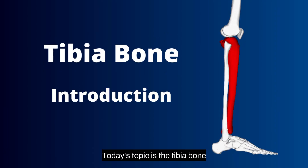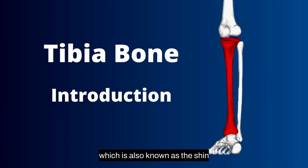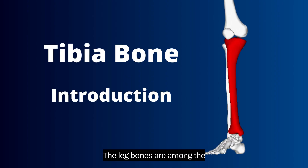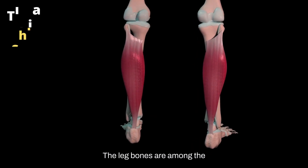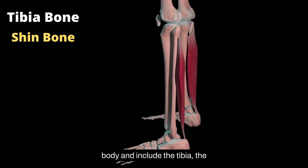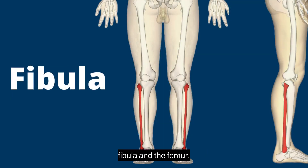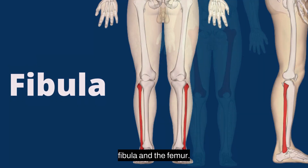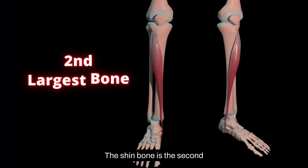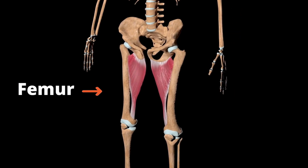Today's topic is the tibia bone, which is also known as the shin bone. The leg bones are among the strongest bones in the human body and include the tibia, the fibula, and the femur. The shin bone is the second largest bone in the body after the femur.